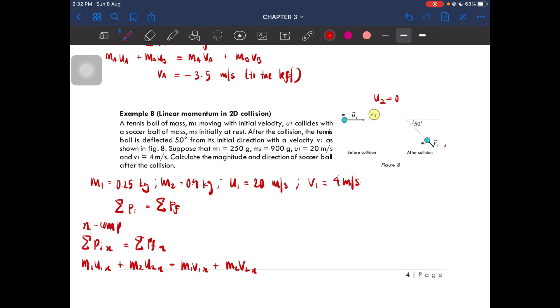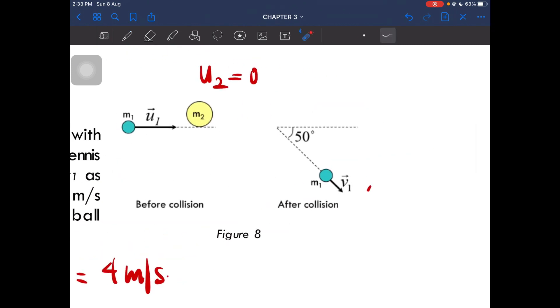Substitute: 0.25 times 20 plus 0 equals 0.25 times v1 cos 50 degrees plus m2, which is 0.9, times what we are looking for. Rearrange and you'll get the soccer ball's velocity in the x-component to be 4.84 meters per second.